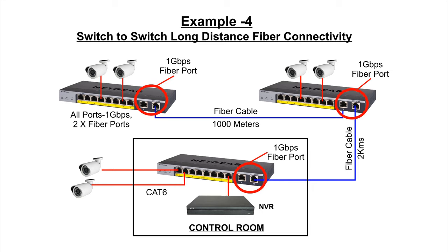Alternatively, switches with all 1 Gbps ports and two 1 Gbps fiber uplink ports can be used and connected via fiber cables. This architecture can be implemented when camera locations are distributed over a vast area. When connecting switches this way, it's important to keep track of the bandwidth load at each stage, as explained earlier.